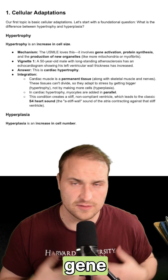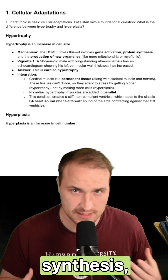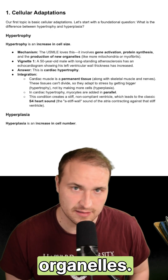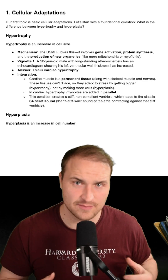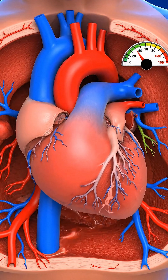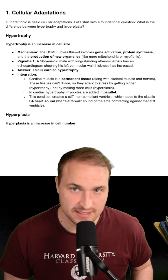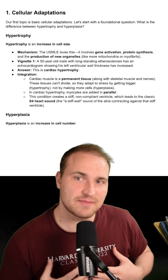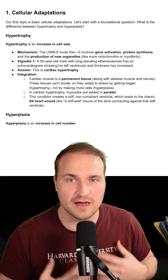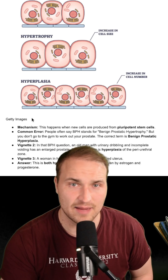Hypertrophy occurs through gene activation, protein synthesis, and new organelles. The classic example is left ventricular hypertrophy in chronic hypertension. Cardiac muscles are permanent tissue, and so they adapt by hypertrophy, not hyperplasia.